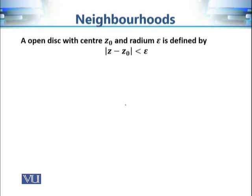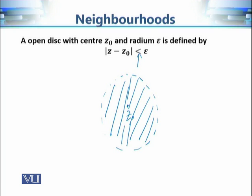Similarly, an open disk is the set of all points whose distance from z₀ is strictly less than ε. There is no equality in this case, so the points on the circle of radius ε centered at z₀ are not included, but every point strictly inside the circle is included. Since the boundary is not included, we call it an open disk.